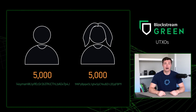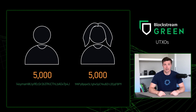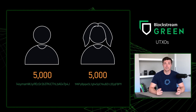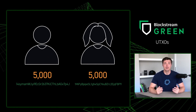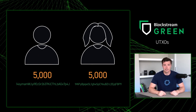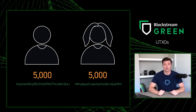So now Bob has one UTXO containing 5,000 sats, and Alice has one UTXO containing 5,000 sats. With all of this UTXO creation and deletion, your Blockstream Green Wallet will take care of all of this behind the scenes so you don't have to sweat a thing.